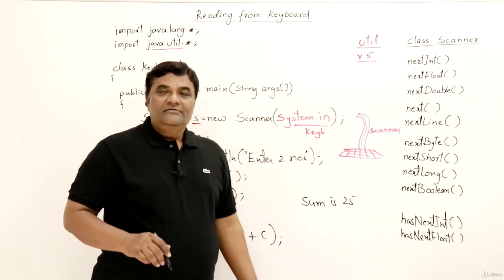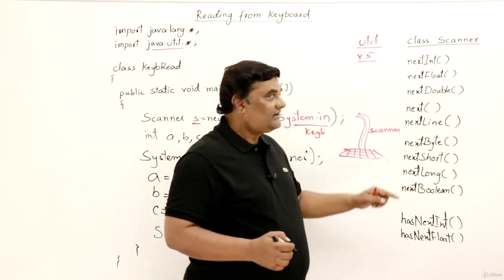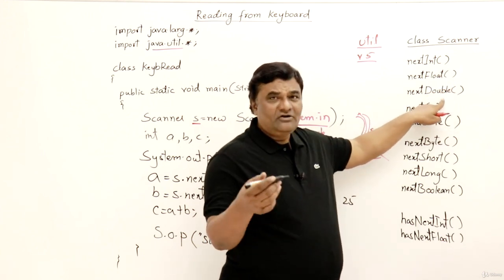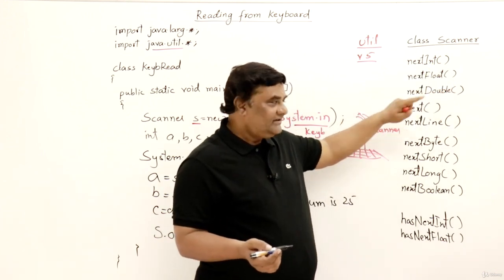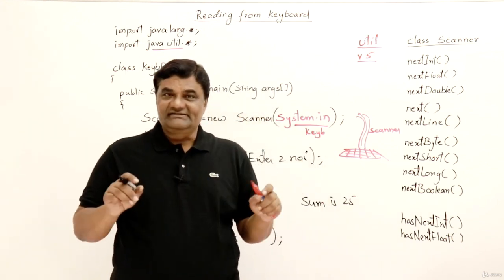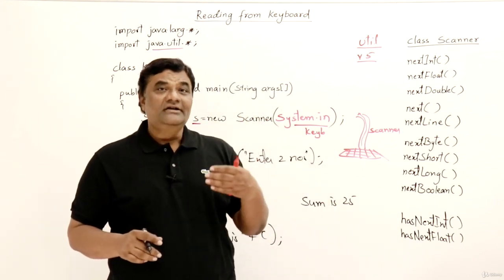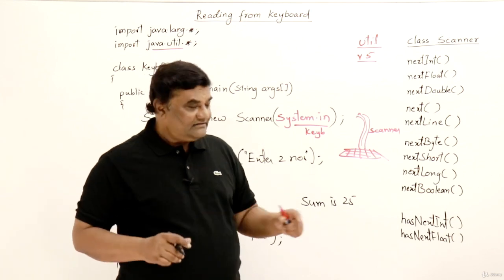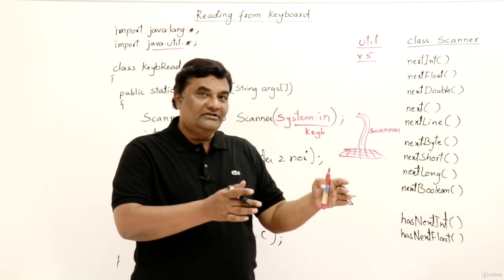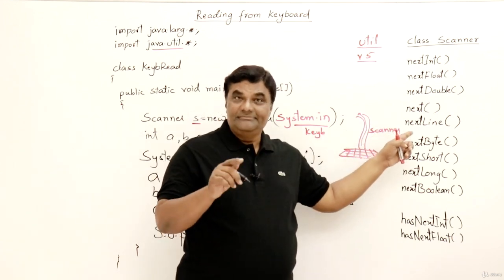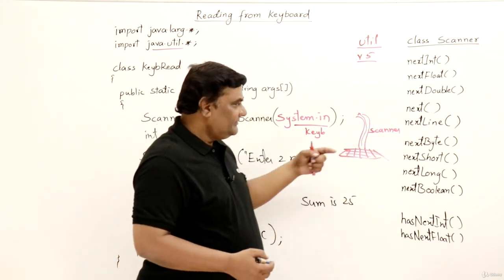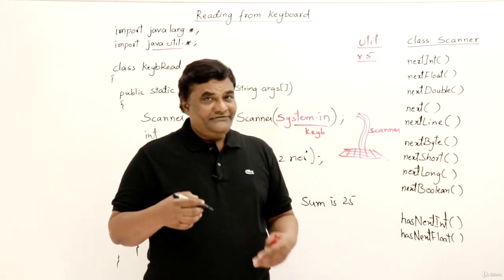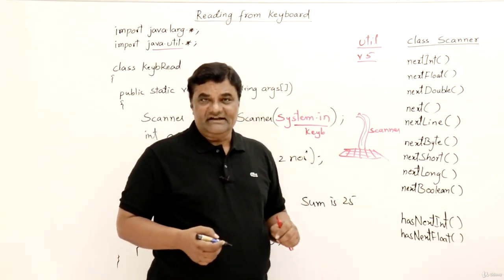Now let's look at all the Scanner methods. nextInt reads an integer. If you want to read a float, use nextFloat; for a decimal, use nextDouble — these are the common data types. If you want to read a string — like a name or a single word — the method is next(). If you want to read a full sentence or line with multiple words, use nextLine(). Other methods like nextByte, nextShort, nextLong, and nextBoolean are also available for different data types supported in Java.